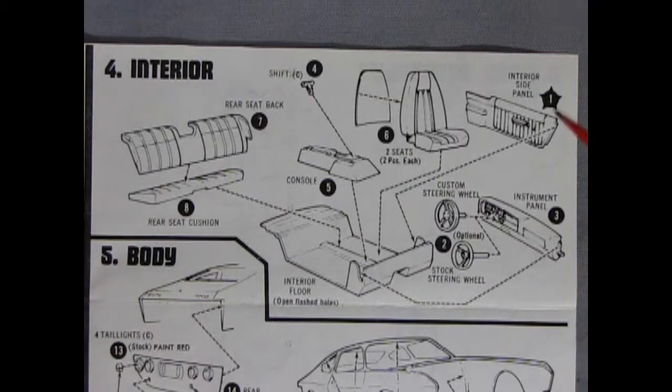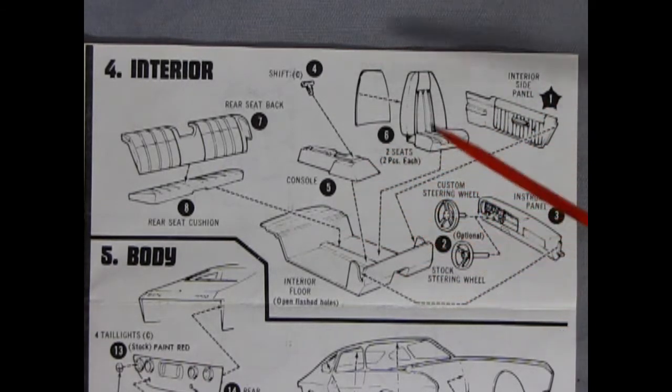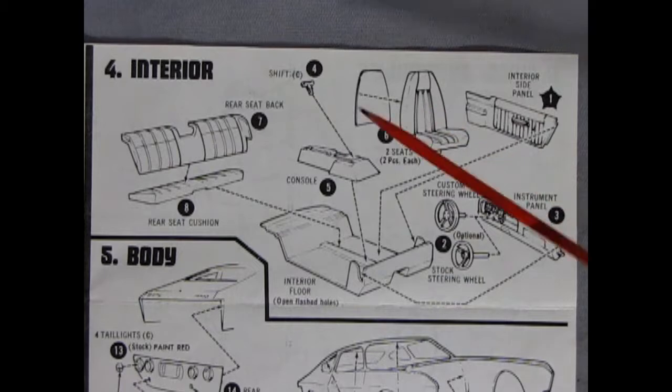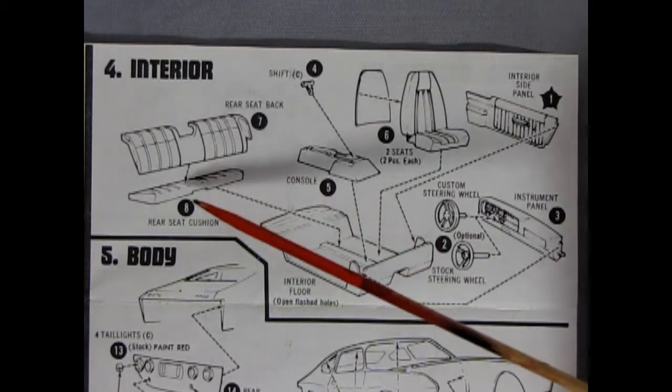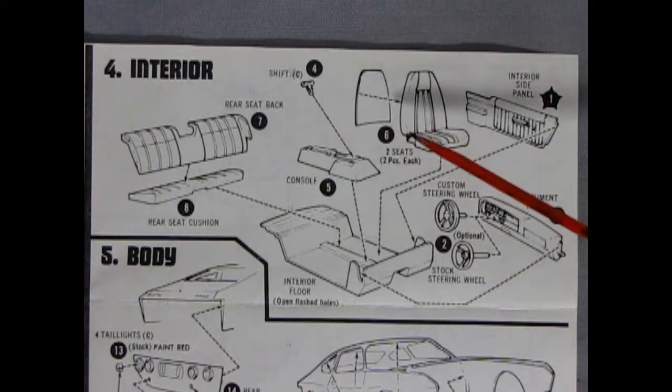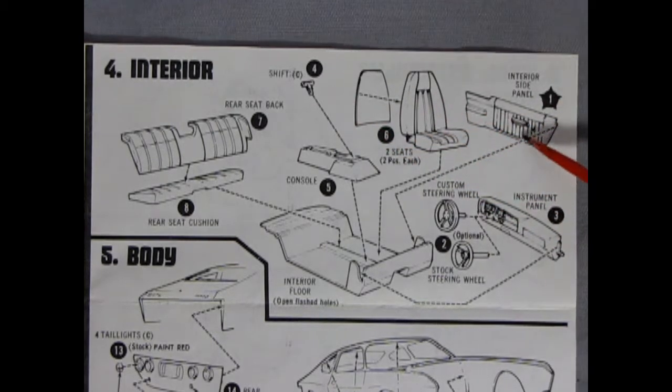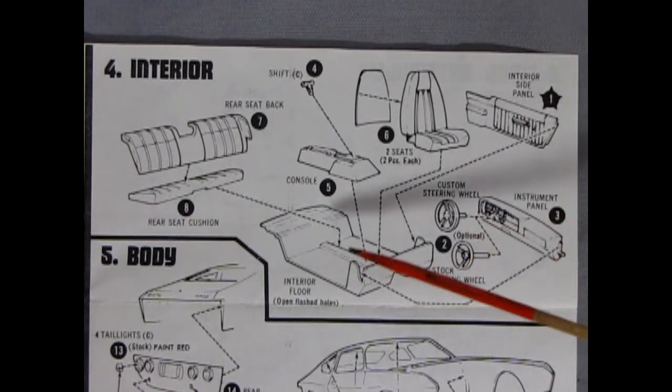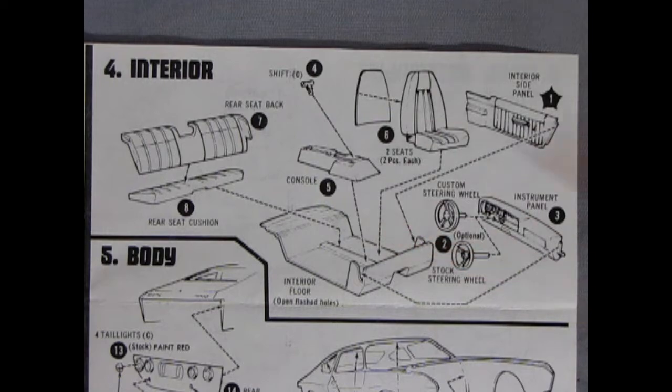Panel four shows our very groovy interior and if you did see that Bobby Allison race car version of the Matador, you know that all of this was blanked out. Well this is how the upholstery looks in the stock version. We have the rear seat back and seat cushion, a console, a shift lever, two-piece bucket seats, interior door panels, a dashboard and your choice of a stock or custom steering wheel and that all goes into the interior floor.